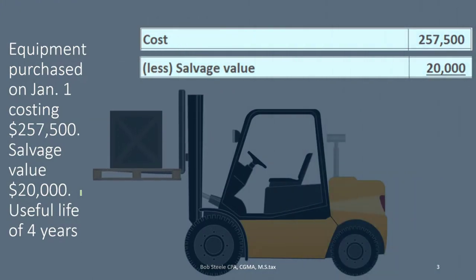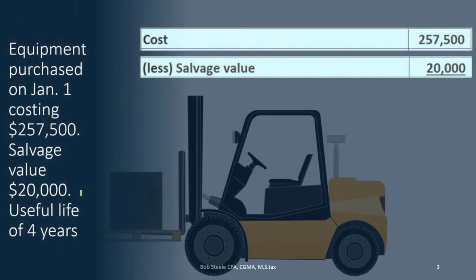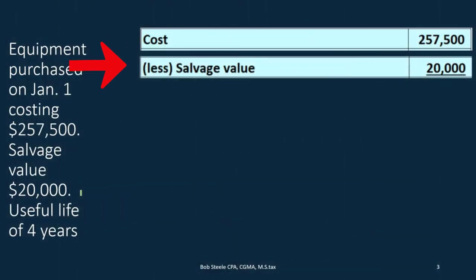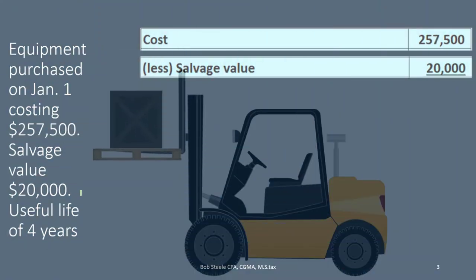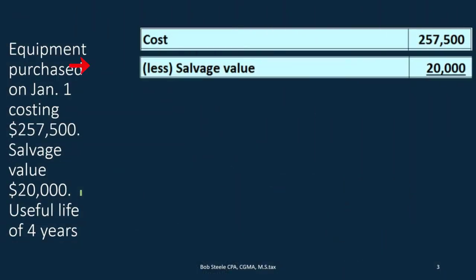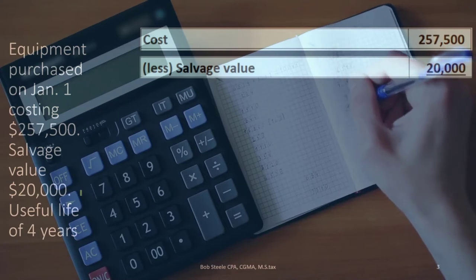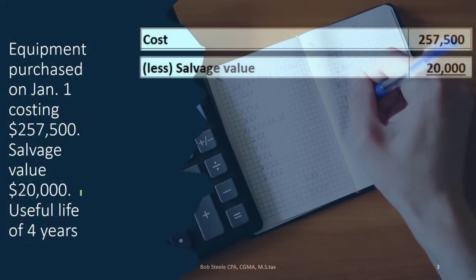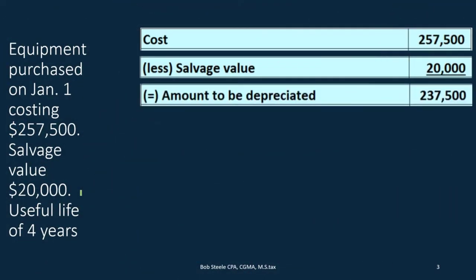What is the salvage value? We have the $20,000 salvage value, which represents the amount of money that we believe we can sell the equipment for at the end of its useful life. So if we were talking about a forklift, at the end of the useful life maybe the forklift is no longer operational, or we could still scrap it for metal — that's the salvage value. That's what we need to depreciate it down to, because that is the amount we believe we can sell it for at the end of its useful life.